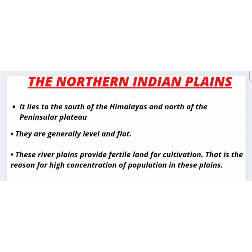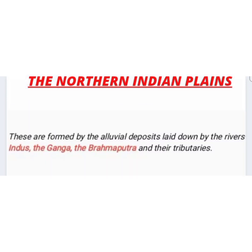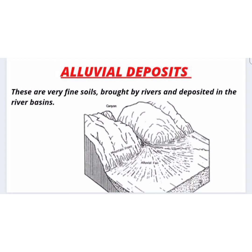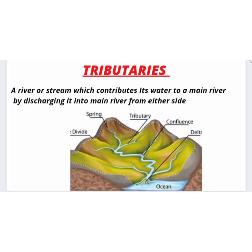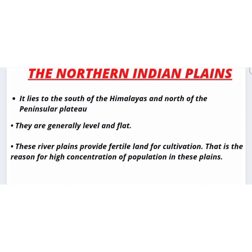Now we will study about the Northern Indian Plains. They lie to the south of the Himalayas and north of the Peninsular Plateau, and are generally level and flat. They are formed by alluvial deposits laid down by the rivers — the Indus, the Ganga, the Brahmaputra, and their tributaries. Alluvial deposits are very fine soil brought by rivers and deposited in the river basin. A tributary is a river or stream that contributes its water to the main river. These river plains provide fertile land for cultivation, which explains the high concentration of population in the Northern Indian Plains.